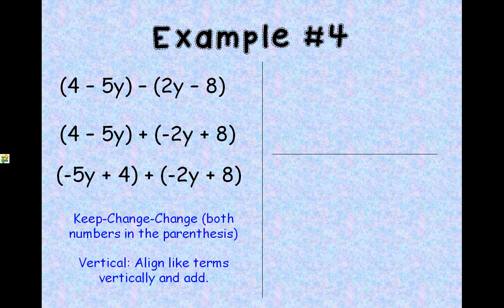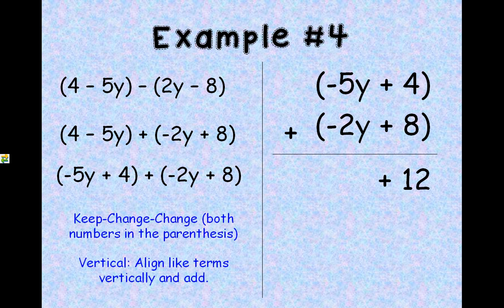And that is what I'm going to do. Now, my y's are first, and my constants are 2. So, I'm going to line them up. 4 plus 8 is 12, and then a negative 5y plus a negative 2y would give me a negative 7y. And that is our answer.